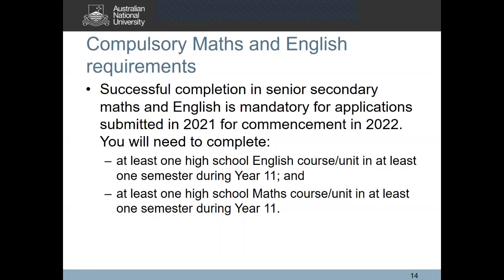ANU has also introduced compulsory maths and English requirements applicable to students who want to start studying at ANU in 2022 and beginning to apply in 2021. In order to meet these requirements you will need to complete at least one high school English course or unit and at least one high school maths course or unit in one semester during your year 11.